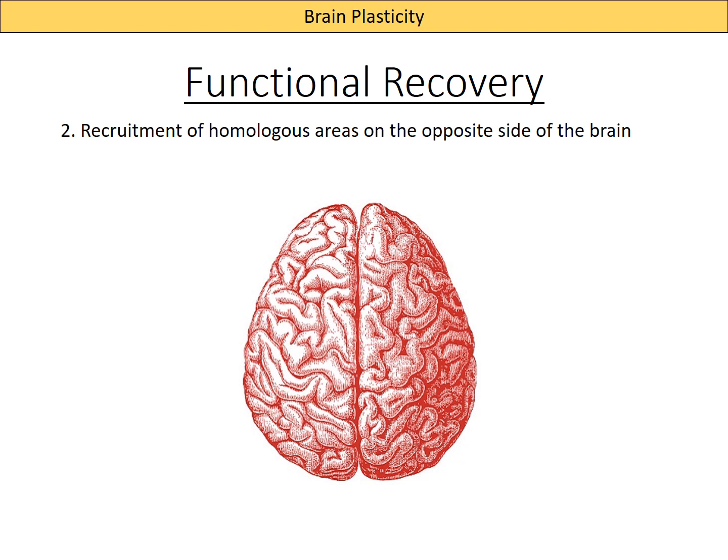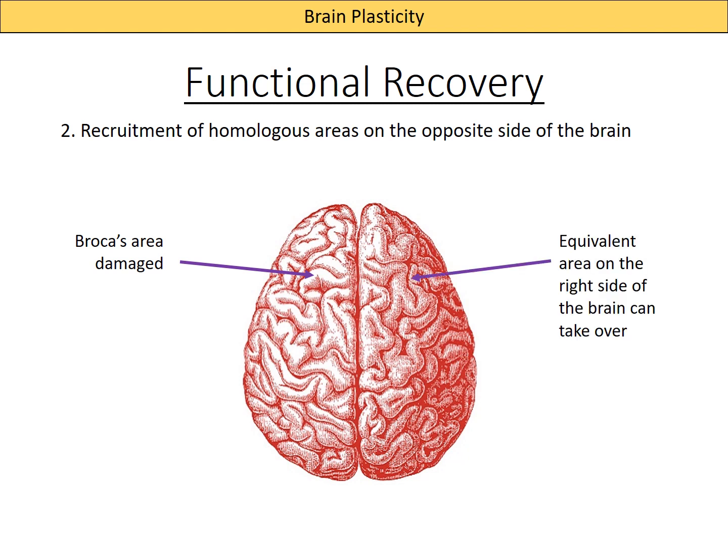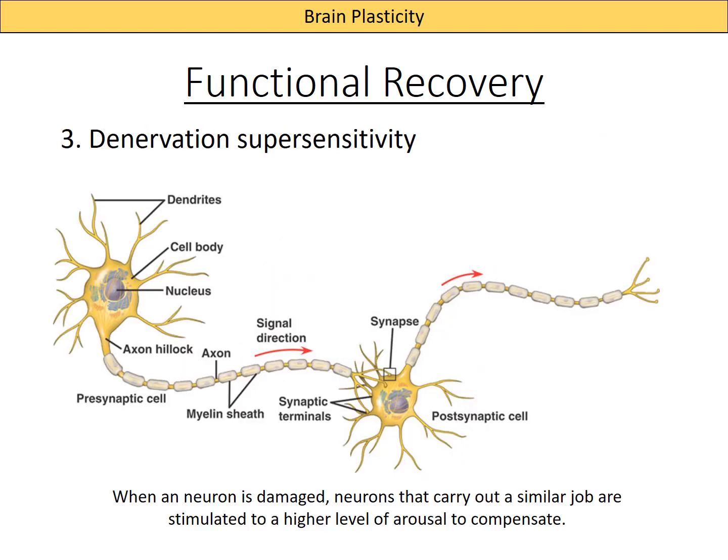A second way in which the brain can help to recover itself after damage is by using the same area on the opposite side of the brain. Taking the example of Broca's area — which is towards the front and on most people the left-hand side of the brain — if that area became damaged, it could be that the equivalent area on the other side would take over that function.